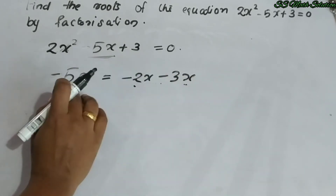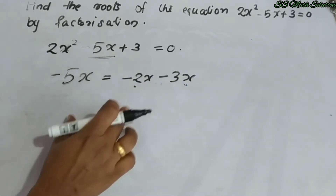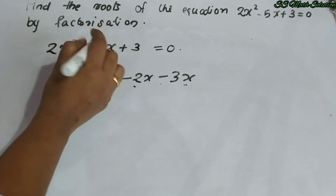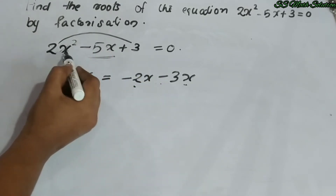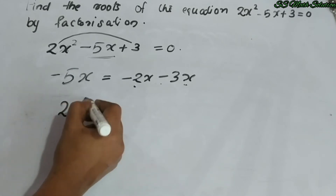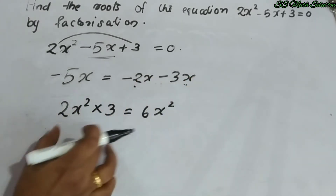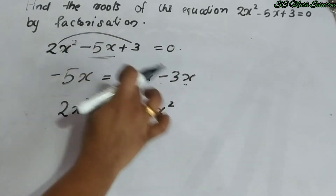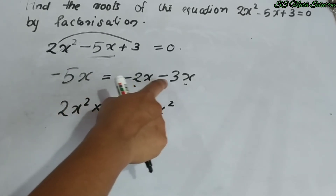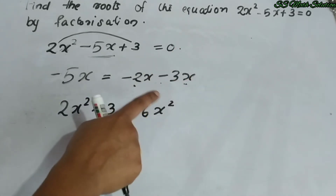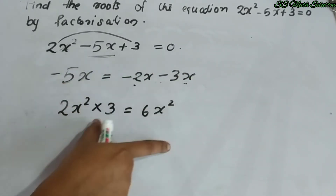We split −5x as −2x − 3x. Why −2x and −3x? From our equation 2x² − 5x + 3 = 0, we check the first and last terms: 2x² multiplied by 3 gives 6x². We need two numbers whose product is 6x² and whose sum gives −5x. Minus 2x times minus 3x equals 6x², and −2x + (−3x) = −5x. So splitting like this makes it easy to factor.